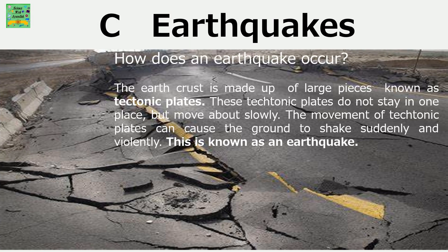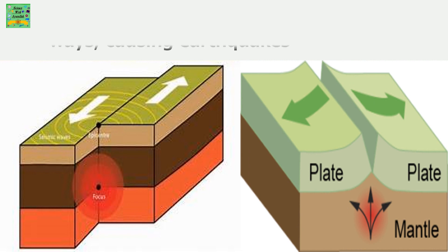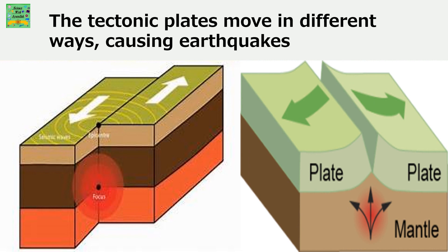How does an earthquake occur? The earth's crust is made up of large pieces known as tectonic plates. These tectonic plates do not stay in one place but move slowly. The movement of tectonic plates can cause the ground to shake suddenly and violently, and this is known as an earthquake. The tectonic plates move in different ways — one tectonic plate could move forward while the other could move backward.